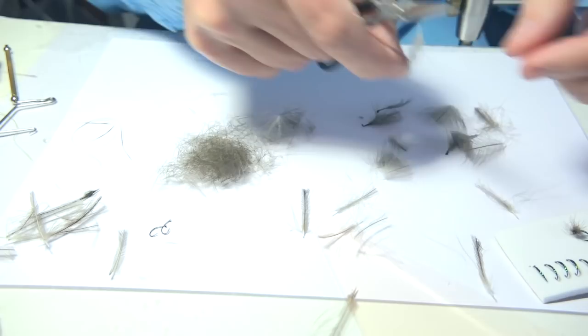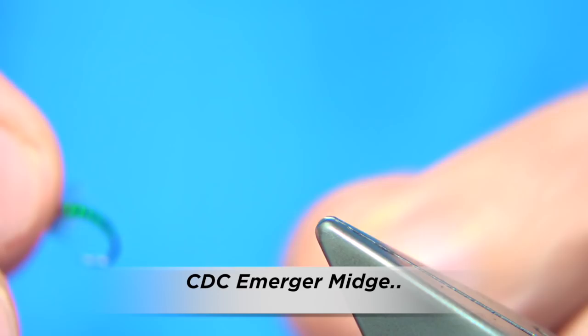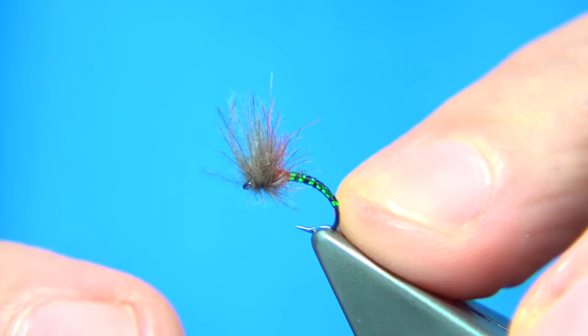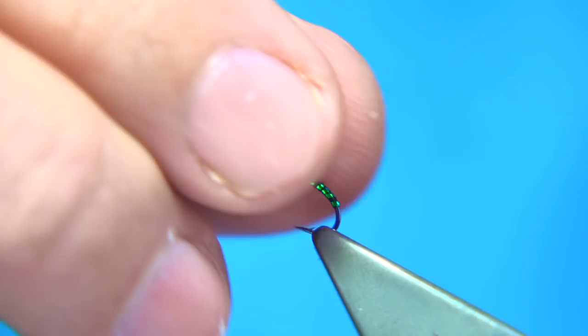Now I'm going to be tying basically an emerger midge pattern using the dubbing. This is just a pearly version, very basic fly. There's going to be a quilled version which is just basically a natural peacock quill on the body.